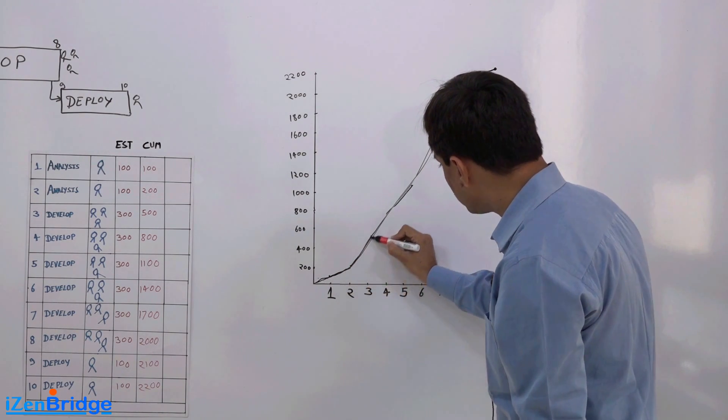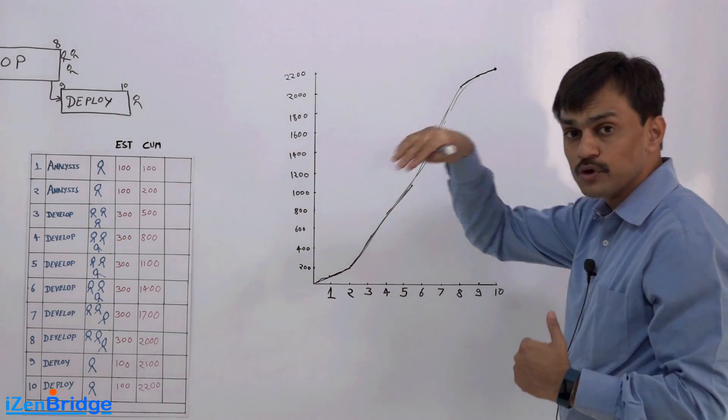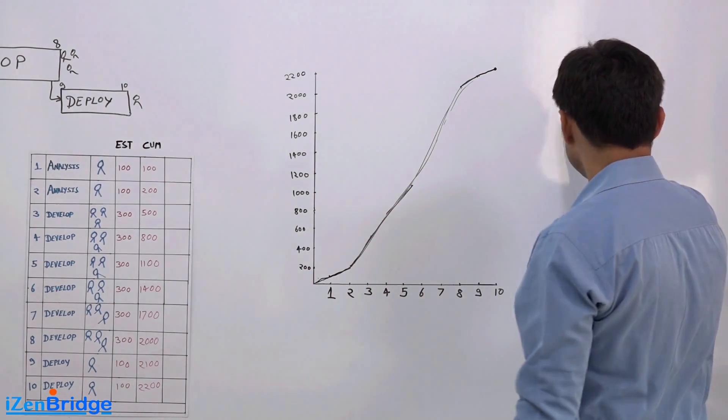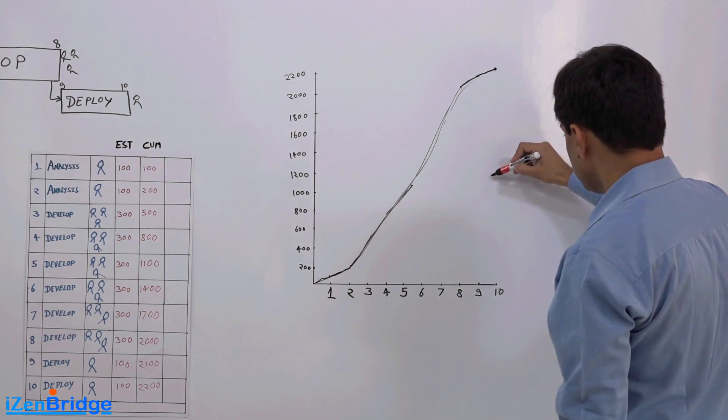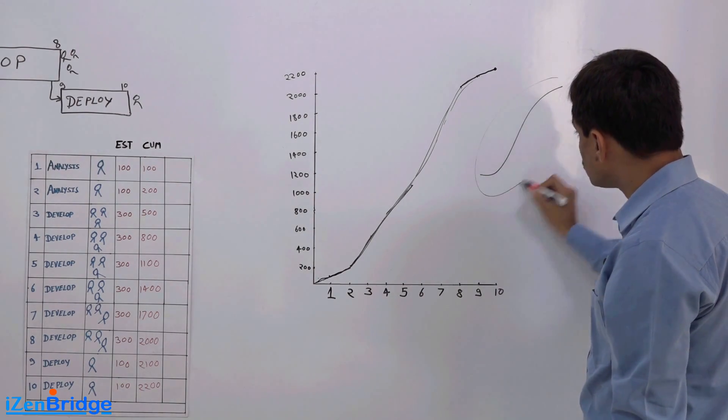This kind of curve may emerge in most of the projects and sometime it becomes more S, like becoming something like this S. Now what is the significance of it?